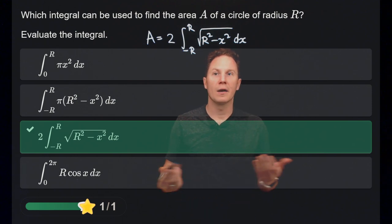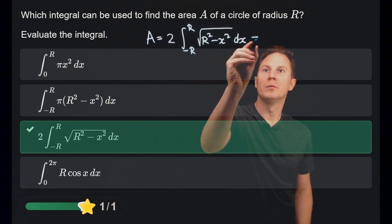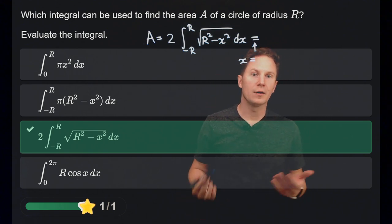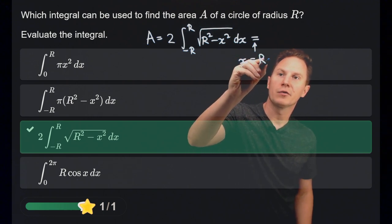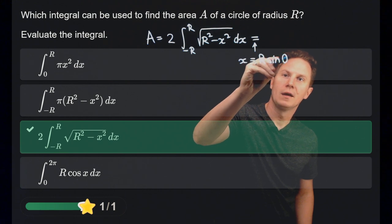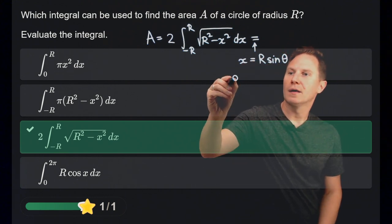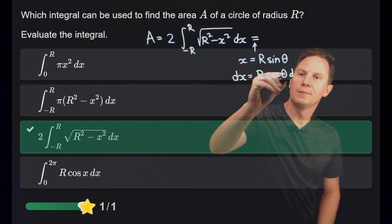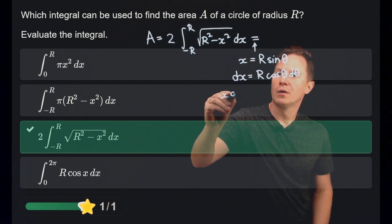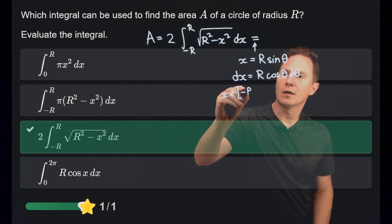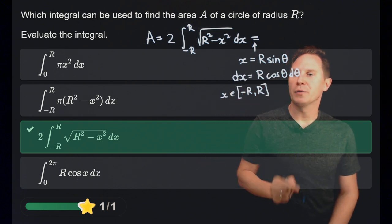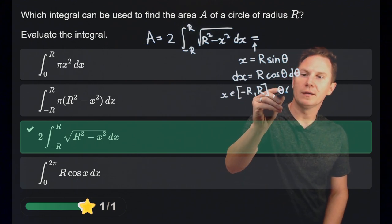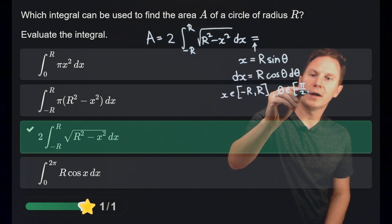To evaluate this integral, a trigonometric substitution is useful of the form x equals r times sine of theta or cosine of theta. Here we go with x equals r times sine of theta, which means dx equals r times cosine of theta d theta. As x changes from negative r to r, sine of theta must change from negative 1 to 1, therefore theta goes from negative pi over 2 to pi over 2.